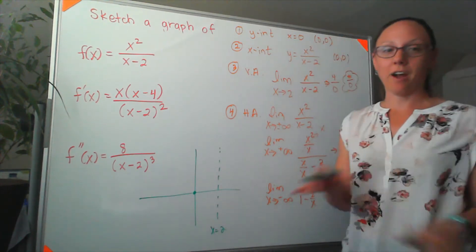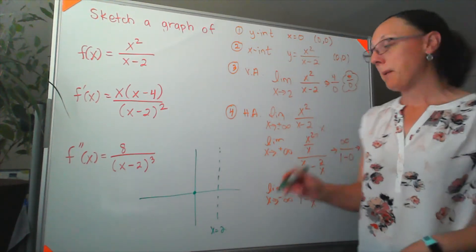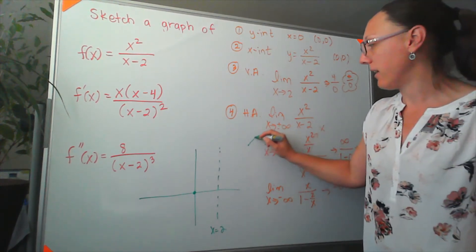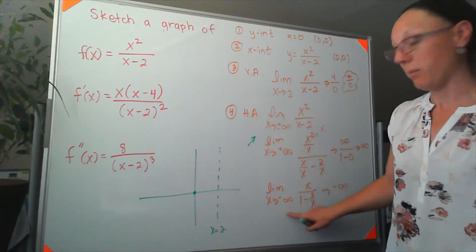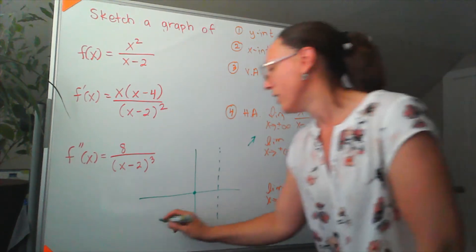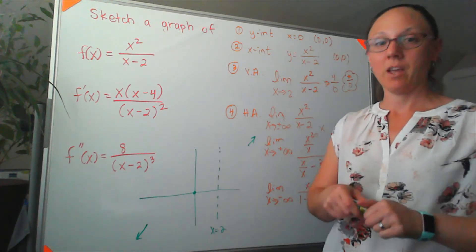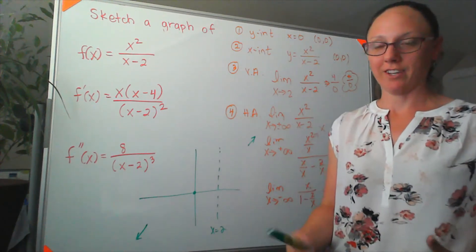And we know that we do not have a horizontal asymptote. But as x approaches positive infinity, we should be heading up to positive infinity. And as x approaches negative infinity, we should be doing something that heads down to negative infinity. Now, we're ready to use our calculus skills.